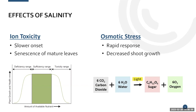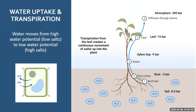Let me show you what happens to a plant under osmotic stress. Water moves from high water potential — places with low salts — to low water potential with high salts. Here's a diagram showing soil at negative 0.3 bar, which is roughly field capacity with a good amount of water. The plant forms a kind of straw through capillary action, opening its stomata so the negative atmosphere sucks water up. Under normal conditions with no salt, water moves from high to low potential and plants are able to uptake that water.